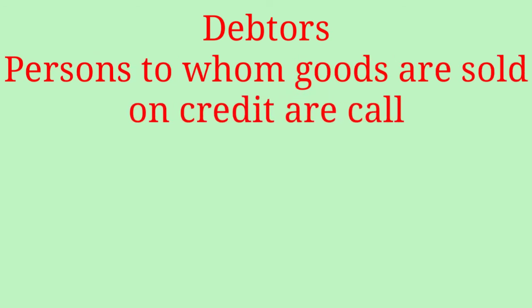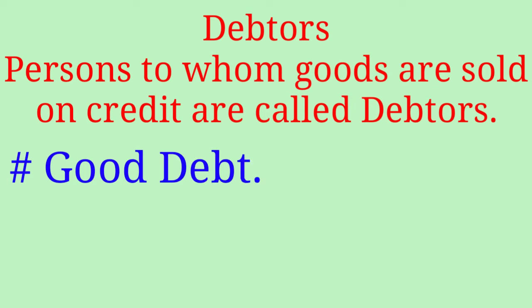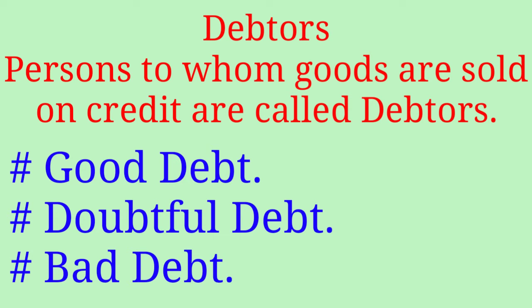Next we have Debtors. Persons to whom goods are sold on credit are called debtors. In accounting language, money due from the customers on credit is called debtors. In fact, sale of goods on credit creates debtors. On assessment, certain debts that are taken as sure to be realized are called good debts. Certain debts considered as doubtful for realization are called doubtful debts. And certain other debts considered totally bad for realization are categorized as bad debts.